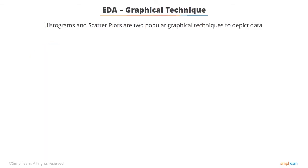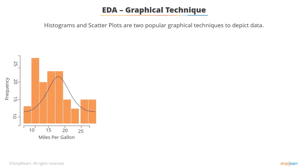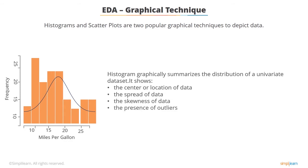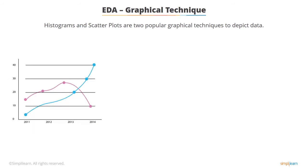There are some popular graphical techniques used to depict data. Histogram is very popular. The purpose of a histogram, or bins, is to graphically summarize the distribution of a univariate data set. It shows the center or location of data, the spread or scale of data, the skewness of data, and the presence of outliers and multiple modes in the data.